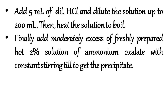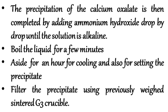Add 5 ml of dilute hydrochloric acid and dilute the solution up to 200 ml with water. Then heat the solution to boil. Finally, add moderately excess of freshly prepared hot 2% solution of ammonium oxalate with constant stirring until a precipitate forms. The precipitation of calcium oxalate is then completed by adding ammonium hydroxide drop by drop until the solution is alkaline.